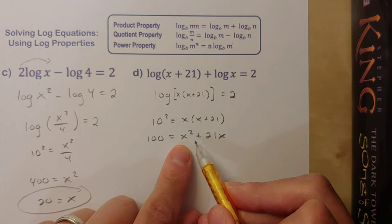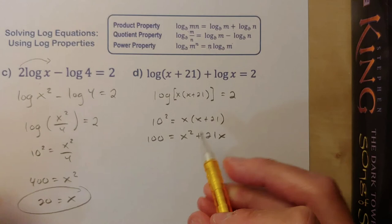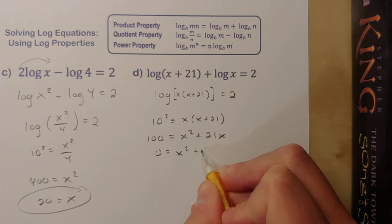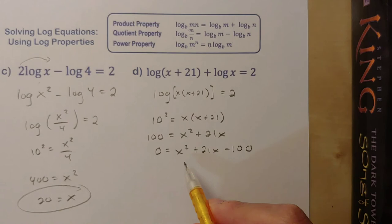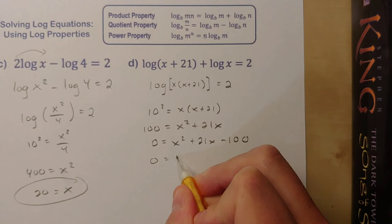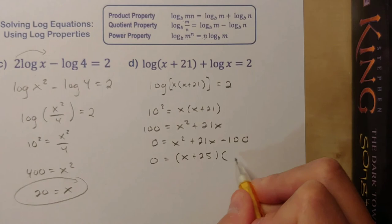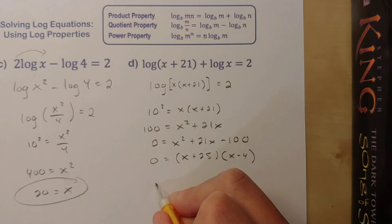If I move this 100 over to get this into standard form, I get x squared plus 21x minus 100. Now it's a matter of solving this quadratic. I could always use the quadratic formula, however I like to check to see if it's factorable first. Turns out this is factorable. This factors into (x+25) times (x-4). Setting each of these equal to 0, we would get x equals negative 25 and x equals positive 4.